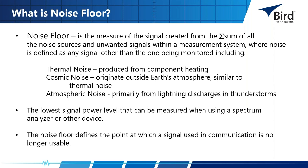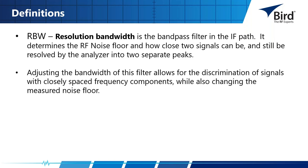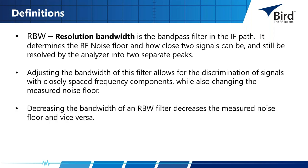The noise floor defines the point at which a signal used in communication is no longer usable. RBW, or resolution bandwidth, is the bandpass filter in the IF path of the analyzer. It determines the RF noise floor and how close two signals can be and still be resolved as two separate peaks. Adjusting the bandwidth of this filter allows discrimination of closely spaced frequency components while also changing the measured noise floor. Decreasing the RBW filter bandwidth decreases the measured noise floor, and vice versa.